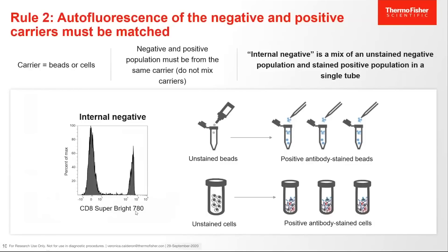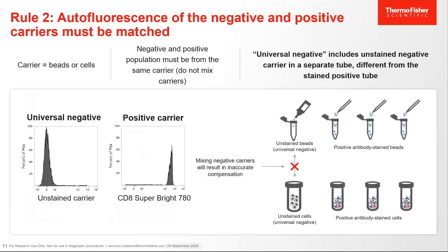A universal negative includes an unstained negative carrier in a separate tube from the stained positive tube, as shown in the histogram. Remember, if using beads as a universal negative, all positive tubes should also be stained beads. And if using cells as a universal negative, all positive tubes should be stained cells. Remember, mixing negative carriers is not recommended and can result in inaccurate compensation.